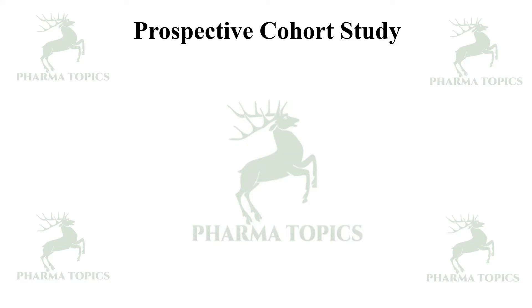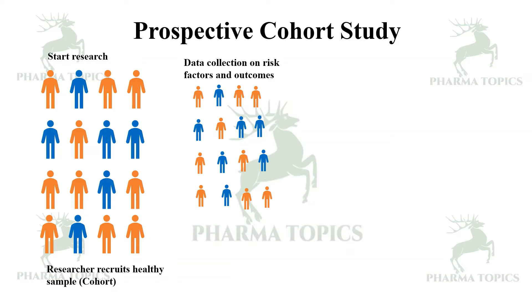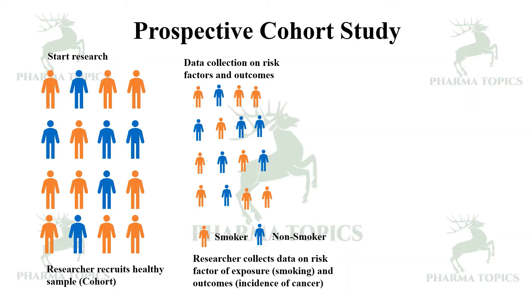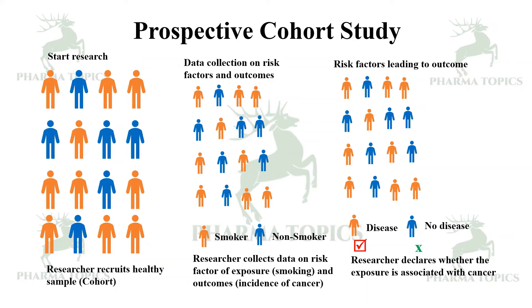In a prospective cohort study diagram: at the start of the research, the researcher recruits a healthy sample — called a cohort. Data collection on risk factors and outcomes are taken into consideration. From the sample, you may have smokers and non-smokers. The researcher collects data on the risk factor of exposure — here the risk factor is smoking — and the outcome is the incidence of cancer, for example lung cancer. Some patients are affected with lung cancer and some are not, and the researcher declares whether the exposure is associated with cancer.